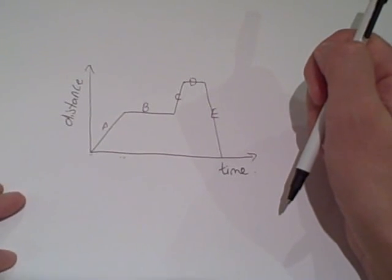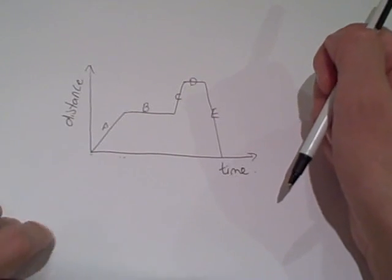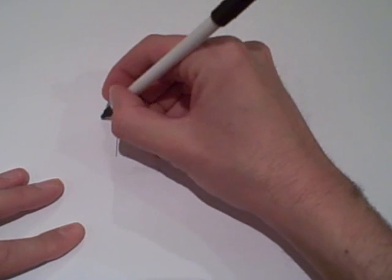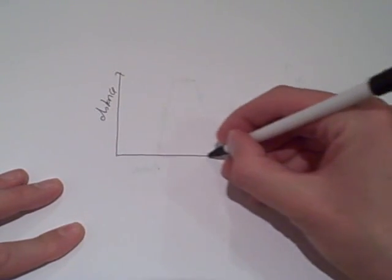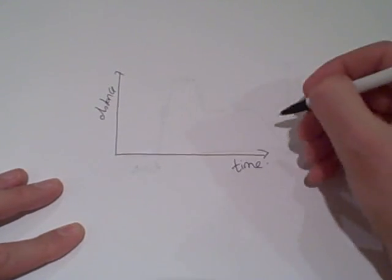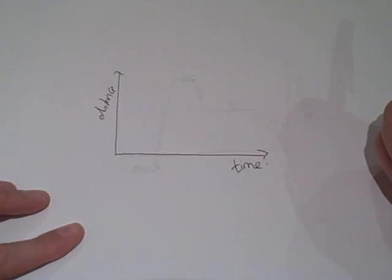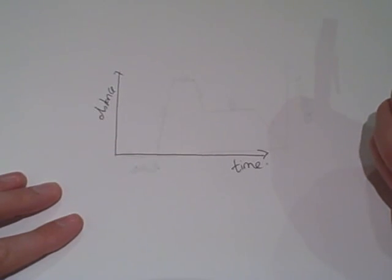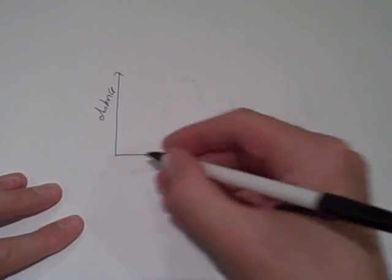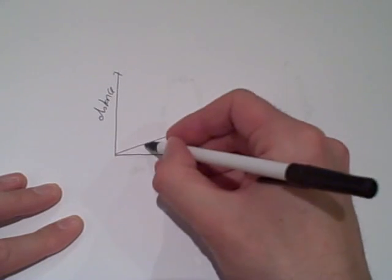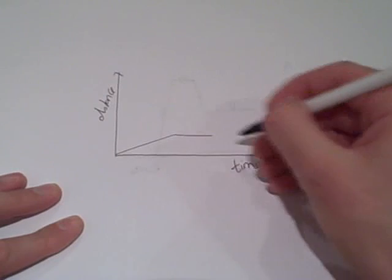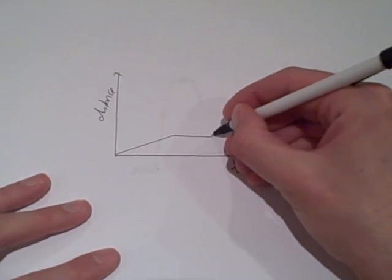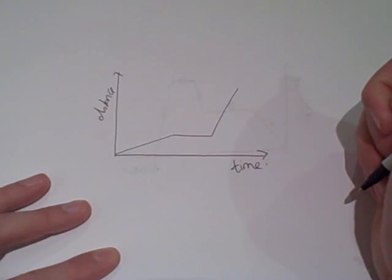Now let's try a few distance-time graphs of your own. Draw a vertical axis and label it distance, and a horizontal axis labelled time. Try showing someone who walks slowly for a short time. Hopefully you drew a shallow gradient going slowly, then the graph goes horizontal as they stop, and then a steeper section showing them going more quickly.